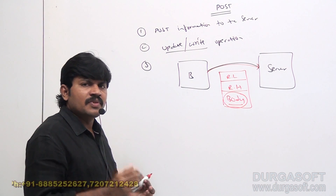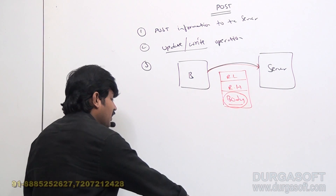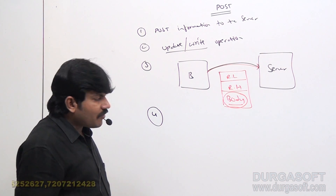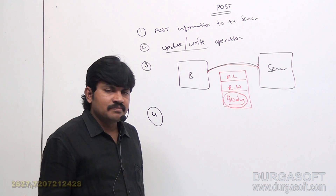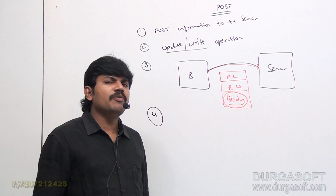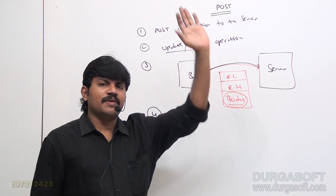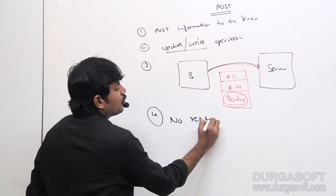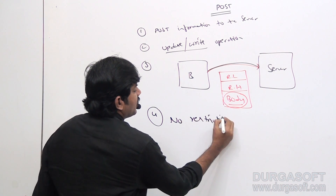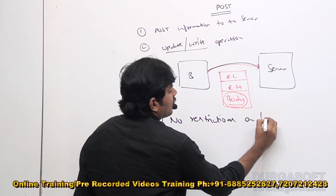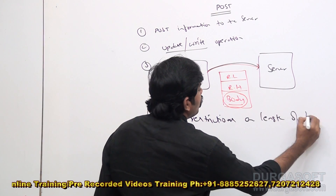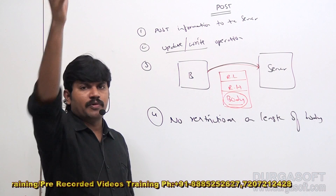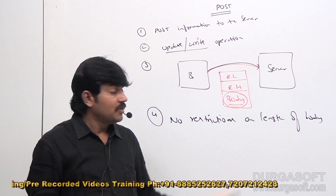Because of this, an endless number of advantages are there. What is the first advantage? What is the size of this body? There is no limit. We can send a huge amount of information to the server — no restrictions on the length of the body. So you can send a huge amount of information to the server, no problem at all.